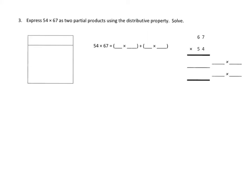I want to do one of the problems where we have more of the supports here, where we have the area model, a partial products area model, and then do another one where we didn't have any of those supports. So let's take a look at problem number three. Let's read that first. We're going to express 54 times 67 as two partial products using the distributive property, and then solve.